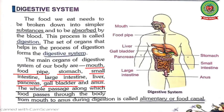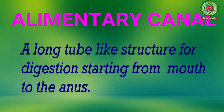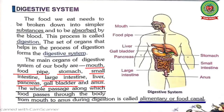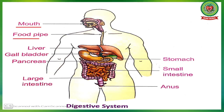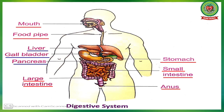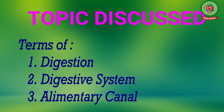The whole passage along which food passes through the body from mouth to anus during digestion is called the alimentary canal, also known as the food canal. It is a long tube-like structure that starts from the mouth to the anus. Look at the picture: the mouth leads to the food pipe, which leads to the stomach, which leads to the small intestine, which leads to the large intestine, and finally to the anus. The digestive glands are the liver, gallbladder, and pancreas.